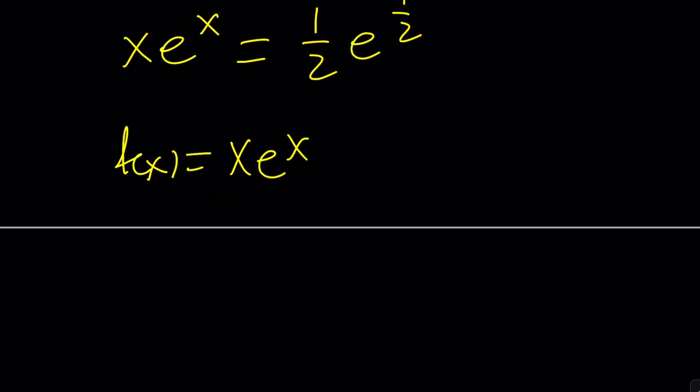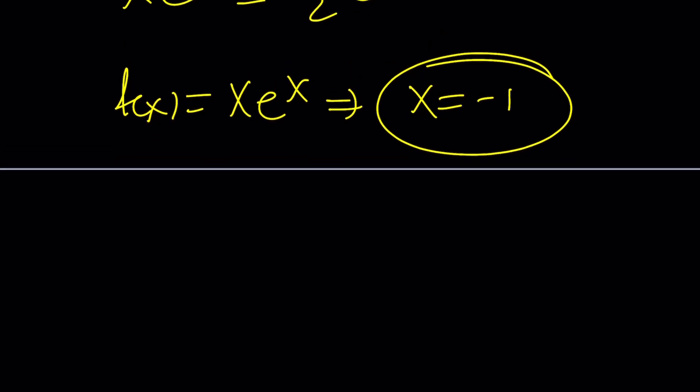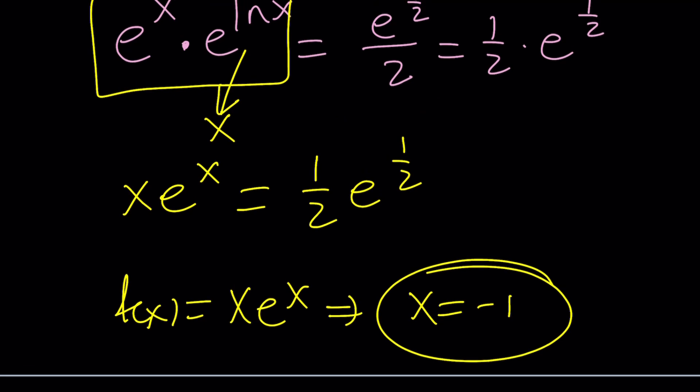If you differentiate this function you're also going to notice that x equals negative one is a critical point and we do have something at that point. It's going to work. But what does this tell you? If it says Lambert's W you're right.